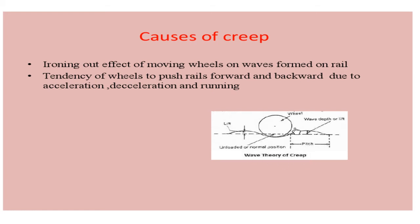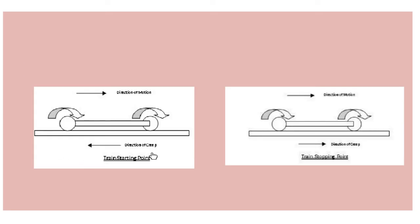You can see the wave theory of creep here — where the wheel falls on the rail, it forms a depression, and the nearby preceding and succeeding portions show a lift. This shows the direction of motion. When the train starts to move, the wheel pushes the rail backward, and during stopping, the wheel pushes the rail forward.